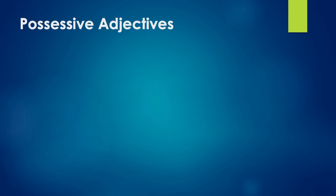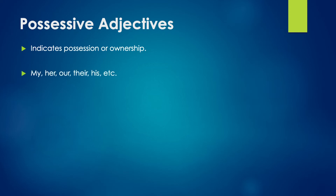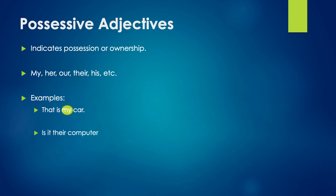A positive adjective indicates possession or ownership. It suggests the belonging of something to someone or something. Some of the mostly used positive adjectives are my, her, our, their, his, etc. For example, that is my car — here, my is the possessive adjective. Is it their computer? — their is the positive adjective. Her necklace is really pretty — in this sentence, her is the positive adjective.